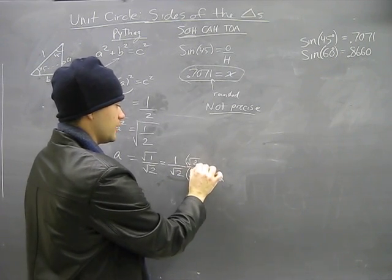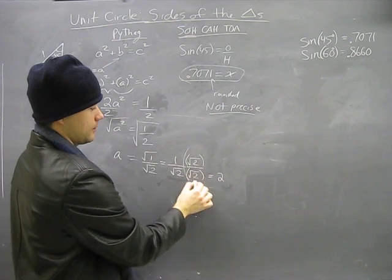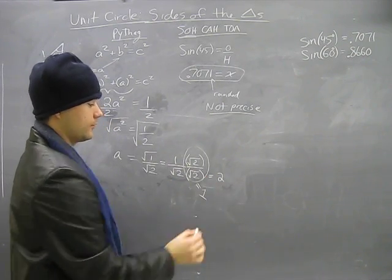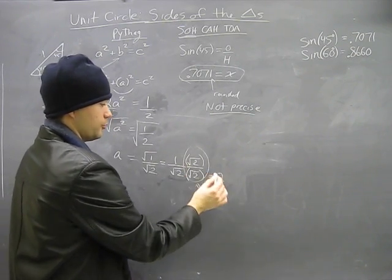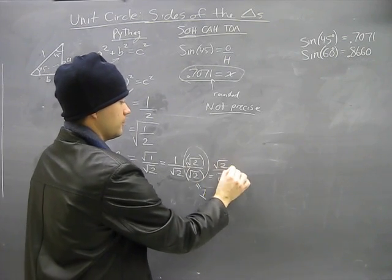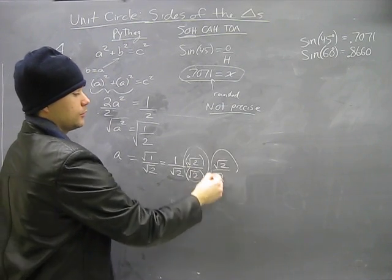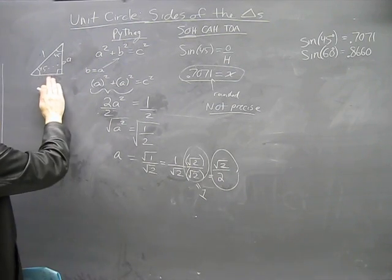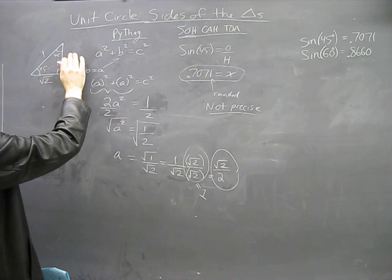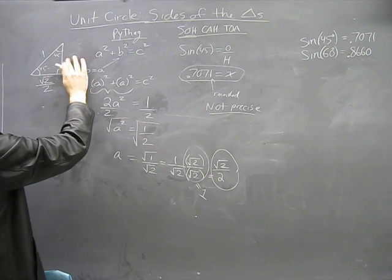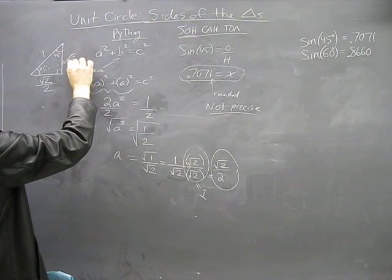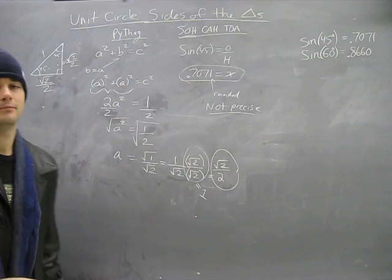Because this here equals one, right? So I'm going to times the numerator by this too, so one times root two is simply root two. So a ends up being root two over two. Root two over two. Root two over two. And we're done.